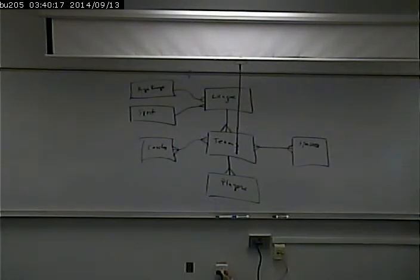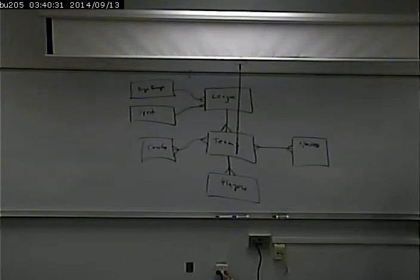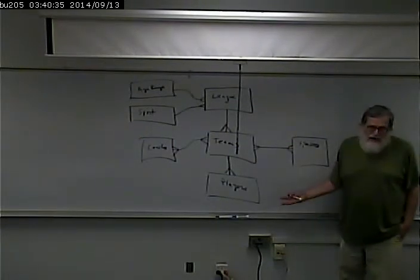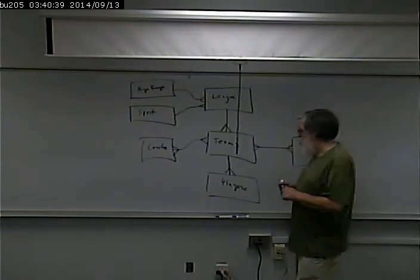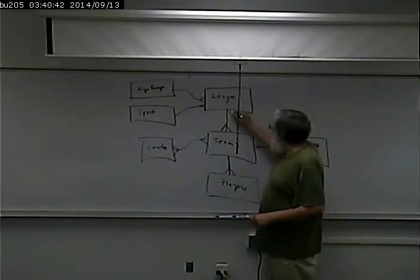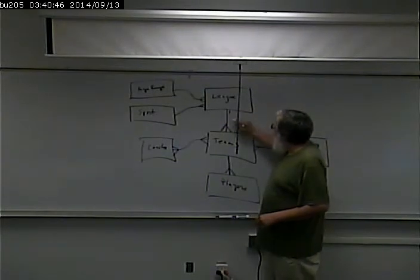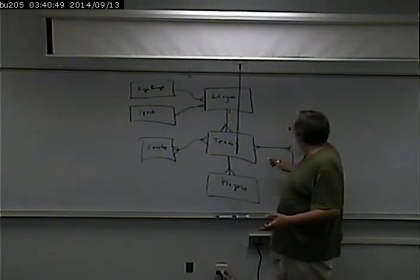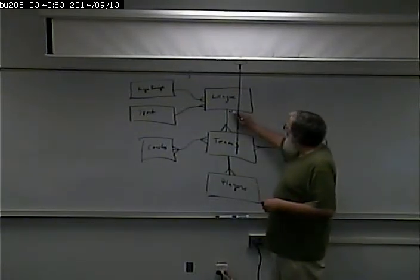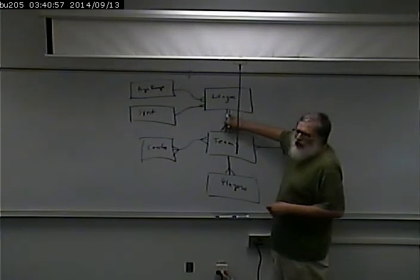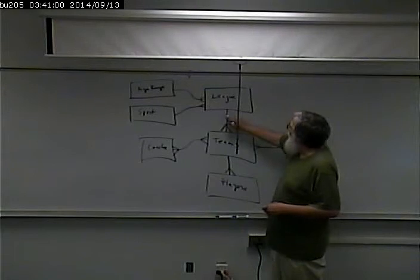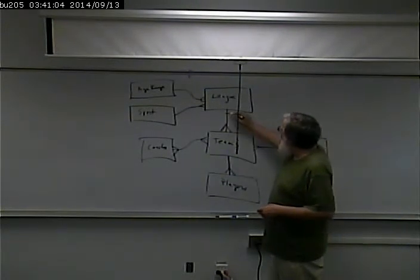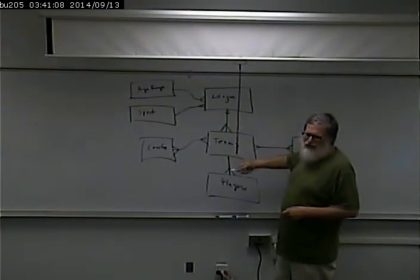These diagrams can get more involved, by the way. I usually keep them simple. I'm interested in the cardinality of the relationship. But there are other things you can consider — for example, whether a relationship is required or not. You could note that everything would be required except sponsors. Different notations show different ways; sometimes they put a one to indicate required, or a zero if it's not required. For example, a team doesn't have to have a sponsor.